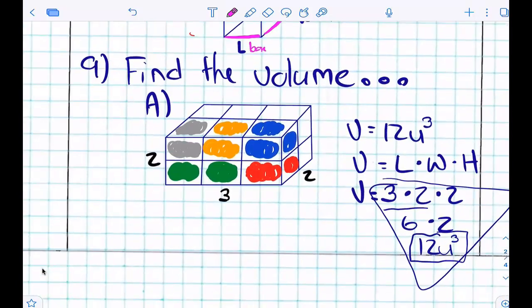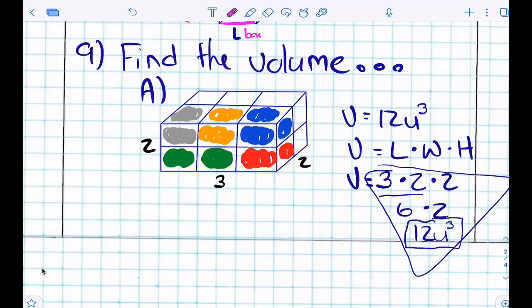Cool. If you have a shape that just gives you all the cubes, could you just count the cubes to find volume? Like you might say, there's one, there's two, there's three, there's four, there's five, this is six, and there's six more on the back side, so it's 12, right? Or could you just use...